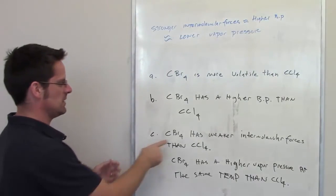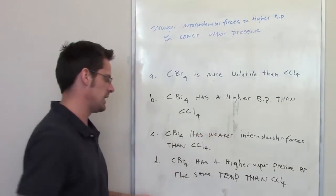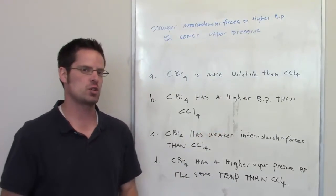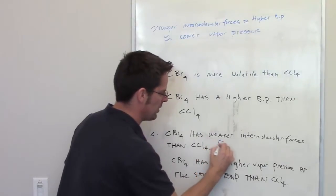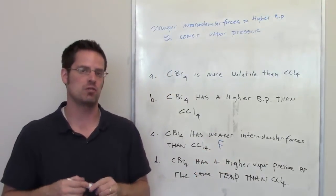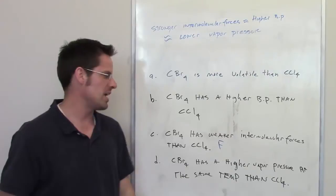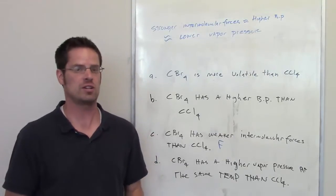That brings us to this statement. Carbon tetrabromide has weaker intermolecular forces than carbon tetrachloride. Is that true or false? Well, as it turns out, that is false because they both have the same types of intermolecular forces, just London forces. So they have equally weak intermolecular forces.